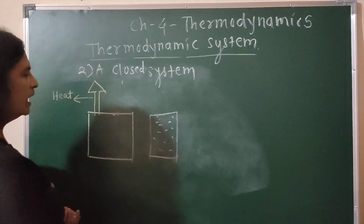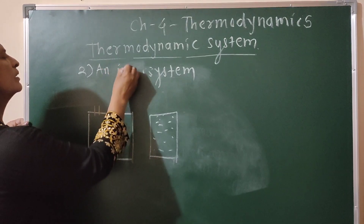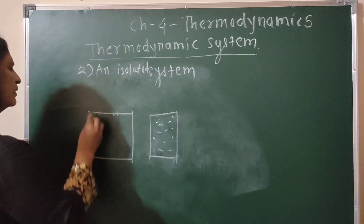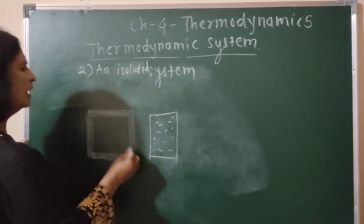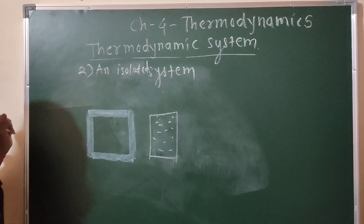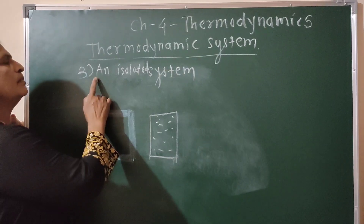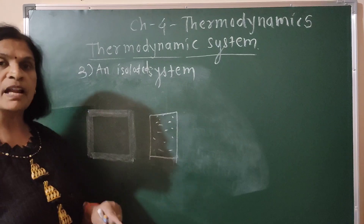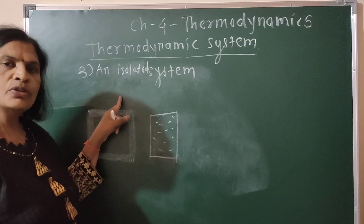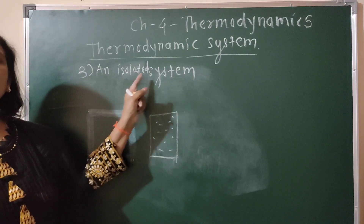The third type is an isolated system. In an isolated system, there is no air, no heat, and no matter exchange. A system that does not allow heat and matter to exchange with the surrounding is called an isolated system. A thermos flask cannot exchange heat or matter with the surrounding, and therefore it is the best example of an isolated system.